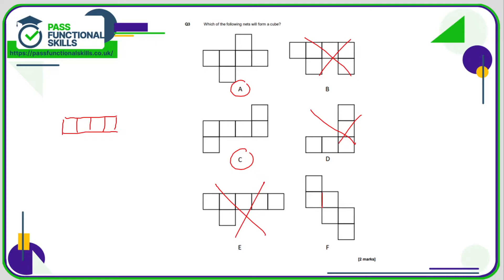F is another way you can make a cube — it's not very obvious. If you make some folds here, we call this the front, then this will be the left-hand side, this will be the top. Another fold there and this would be the bottom. A fold here and this would be the right-hand side, and this would be the back. So A, C, and also F will form a cube.